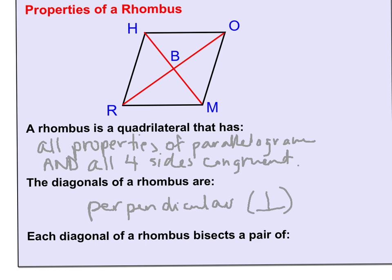That also means if I look up here at the picture that I would be able to show that angle B is a right angle because we know perpendicular means two segments that form 90 degree angles.